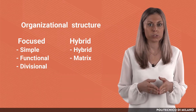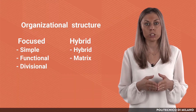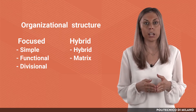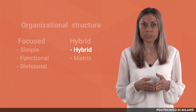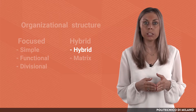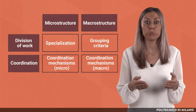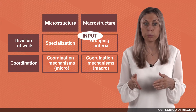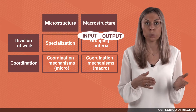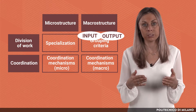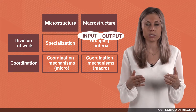Considering the five options of the organizational structures, in this lecture we are going to see the hybrid one. The hybrid structure is mainly the combination of functional and divisional structure. In the hybrid structure, both grouping criteria oriented to input and oriented to output are simultaneously used, but in different parts of the organization.